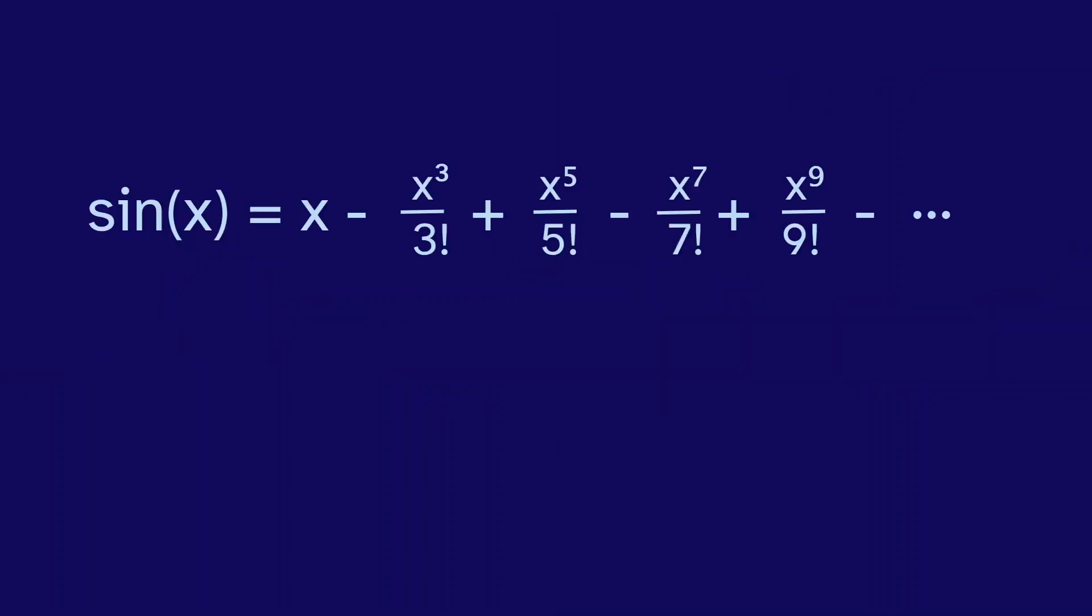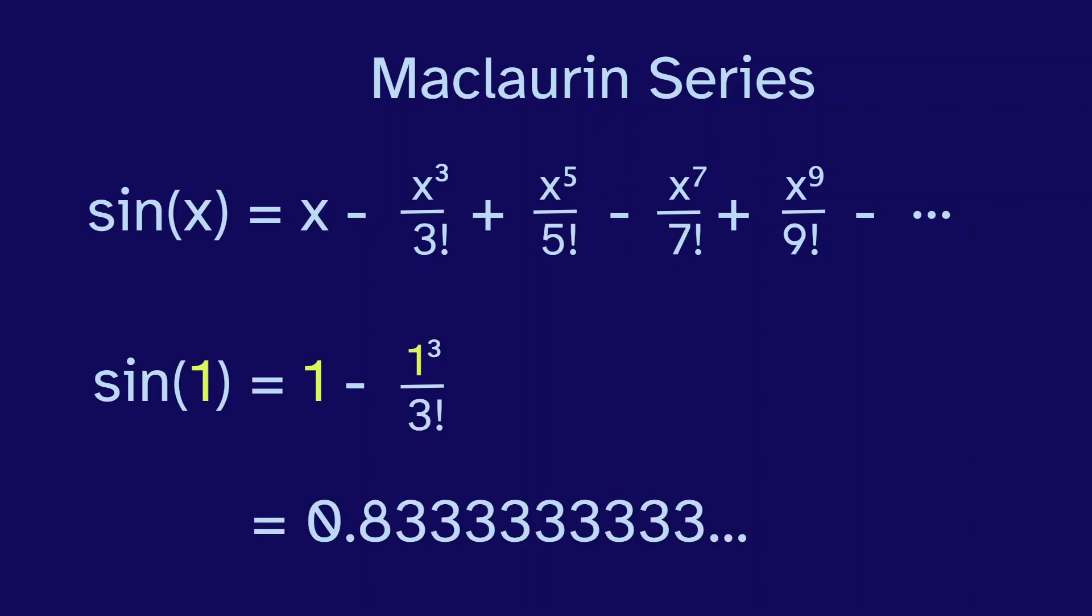To calculate it, we can rewrite sine using its Maclaurin series, an infinite polynomial. So sine of 1 is 1, minus 1 to the third over 3 factorial, plus 1 to the fifth over 5 factorial.